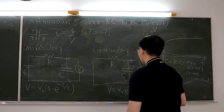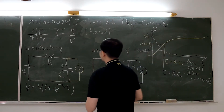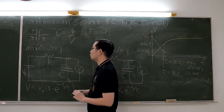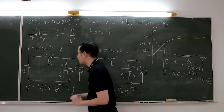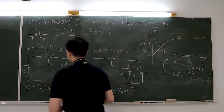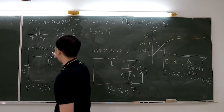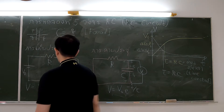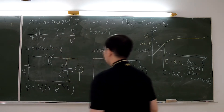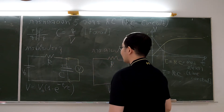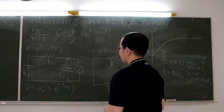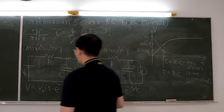In this experiment we study in two parts. Part 1: we study a charging circuit made from a battery connected in series with a resistor and a capacitor.